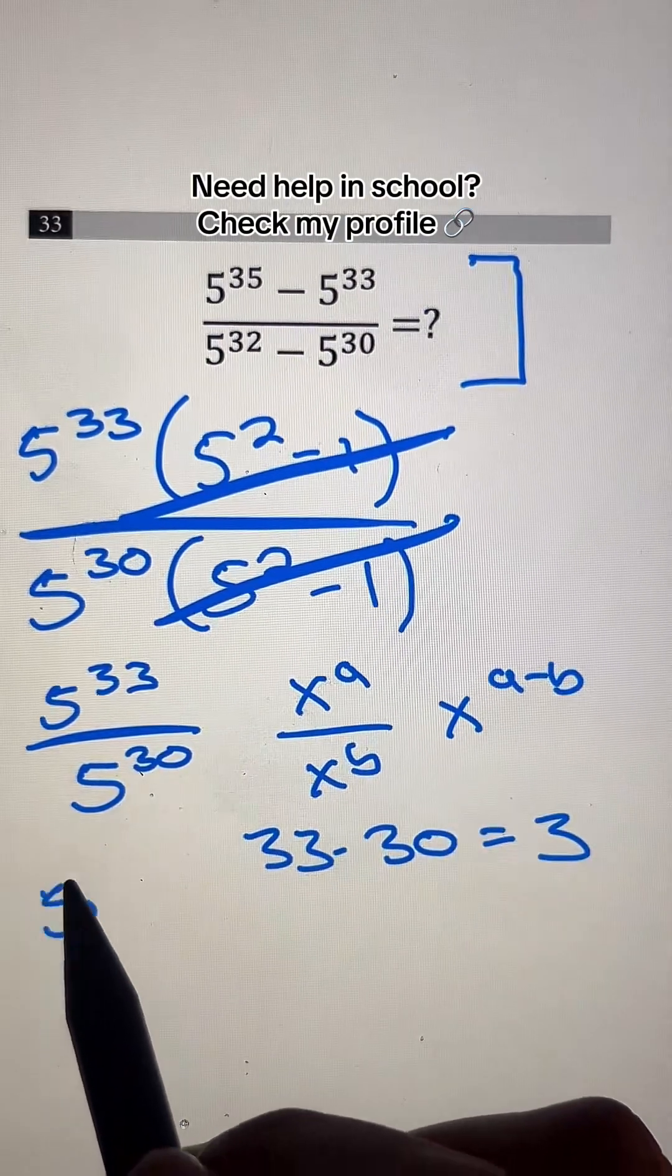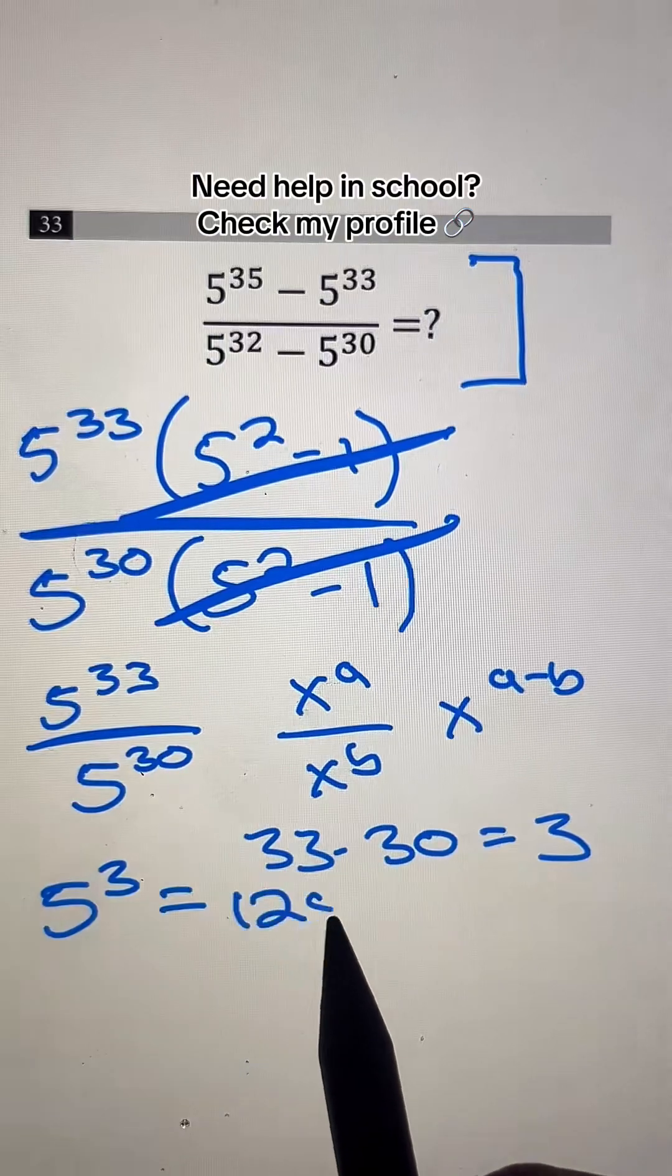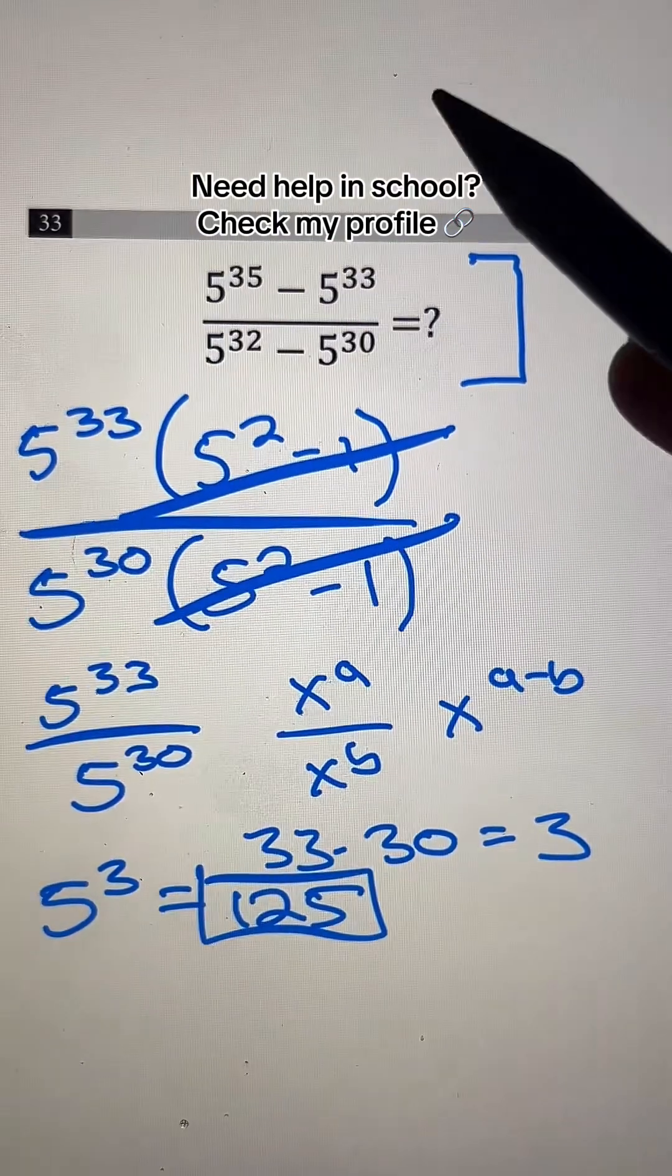On the bottom, we have 5. So we're left with 5 to the 3rd power, which is just 125. And that's going to be our answer. And if you need help with math, then just go over here.